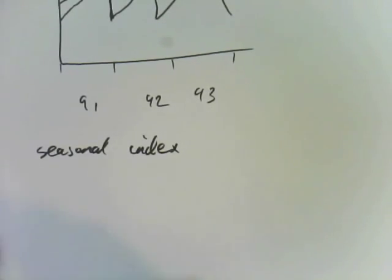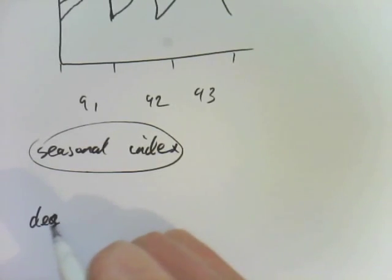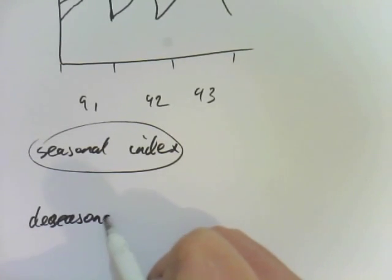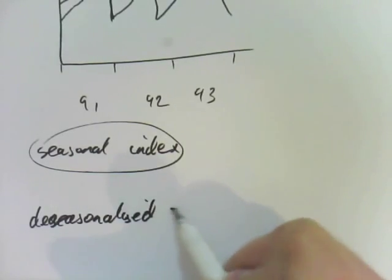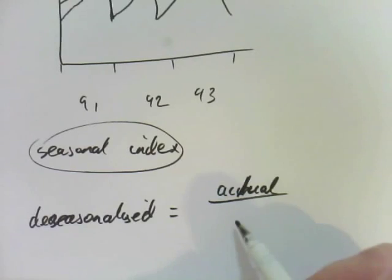With the seasonal index, if you have the de-seasonalized, that equals the actual divided by the seasonal index. I really can't spell today.